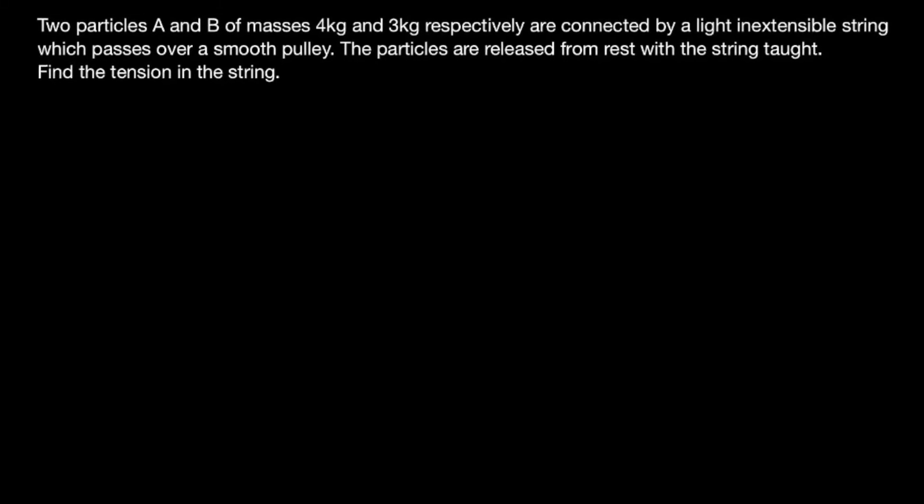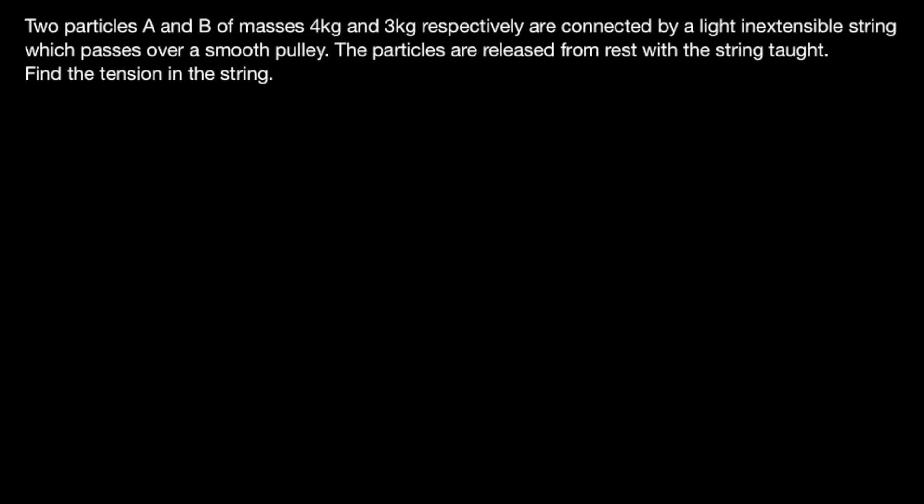So with that being said, let's have a look at a generic pulleys question. Two particles A and B of masses four kilograms and three kilograms respectively are connected by a light inextensible string which passes over a smooth pulley. The particles are released from rest with the string taut. Find the tension in the string. Okay, so let's start by drawing a diagram.